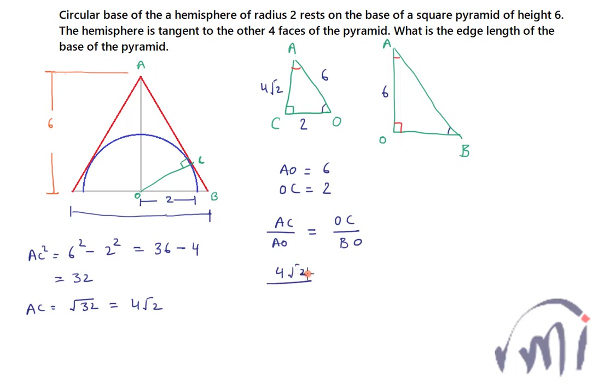And now if I use this relation, AC we know is 4√2, AO is 6, and this is equal to OC which is 2 divided by BO. BO we have to find, so from here we can say BO is equal to 2 multiplied by 6 divided by 4√2.